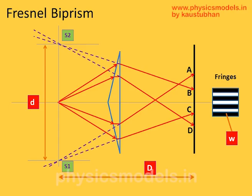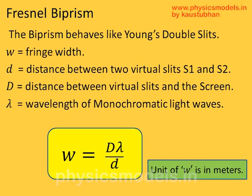So we started with the real source of light and landed with two virtual sources. And the fringe width is defined as equal to capital D into the wavelength of light divided by the small d.